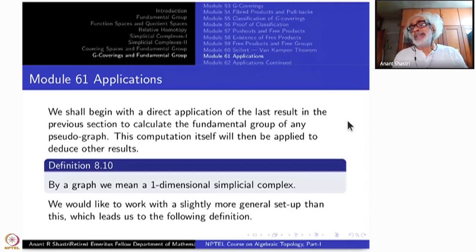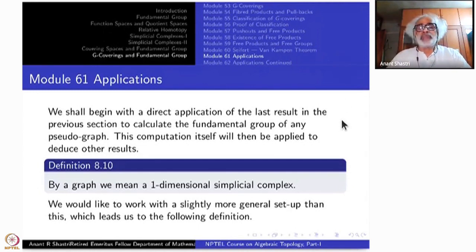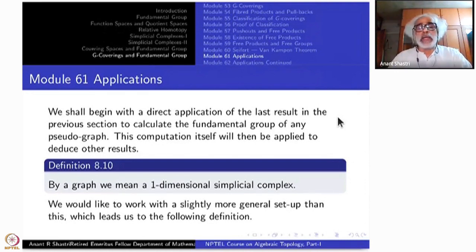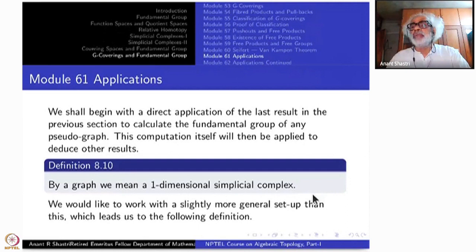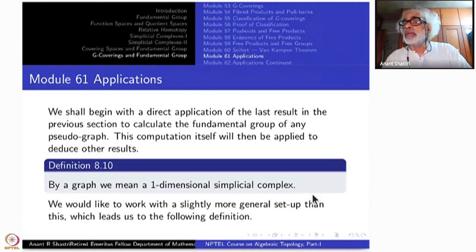We would like to extend the notion of a one-dimensional simplicial complex slightly to something more general. Such things are called pseudographs. By a graph, I will mean a one-dimensional simplicial complex. A pseudograph means you can have a single vertex with a loop around it, or two vertices with many edges between them. These things are not allowed in a one-dimensional simplicial complex.